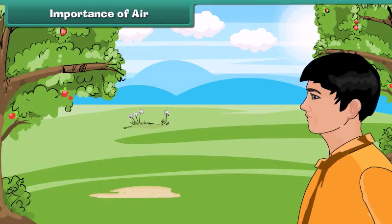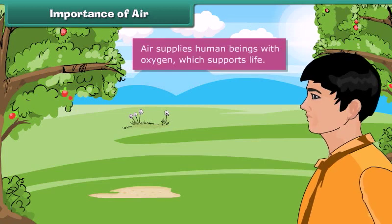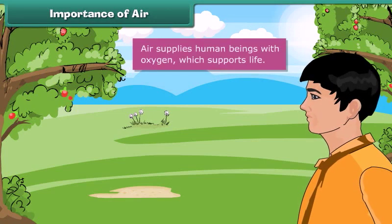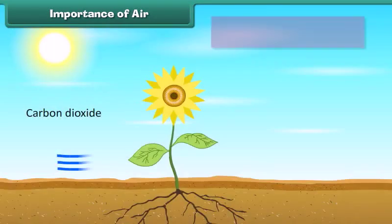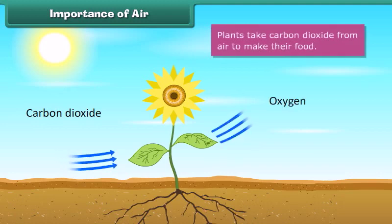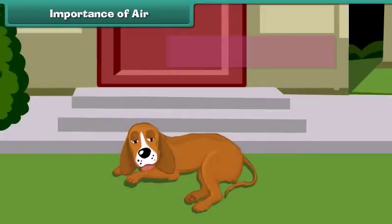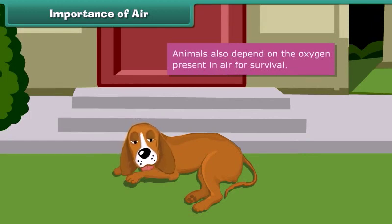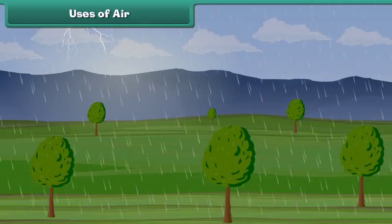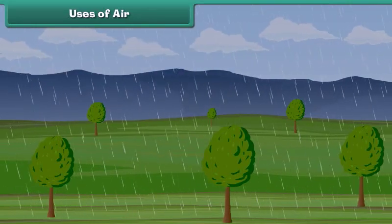Air supplies human beings with oxygen, which supports life. Plants take carbon dioxide from air to make their food. Animals also depend on the oxygen present in the air for survival.